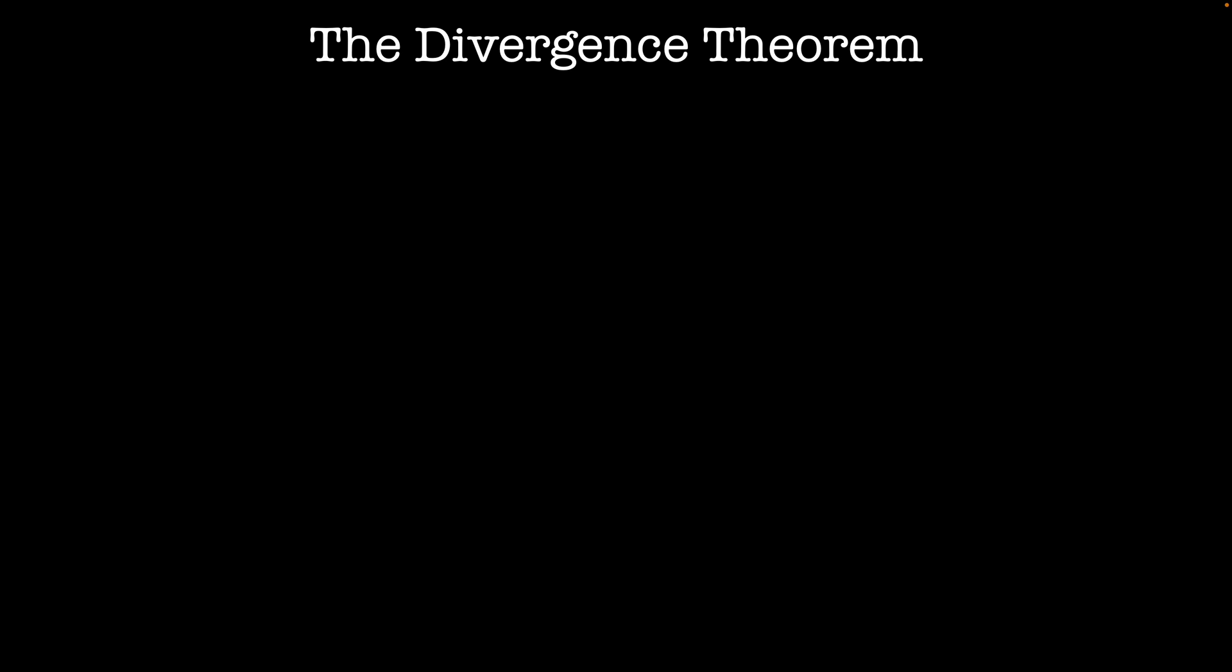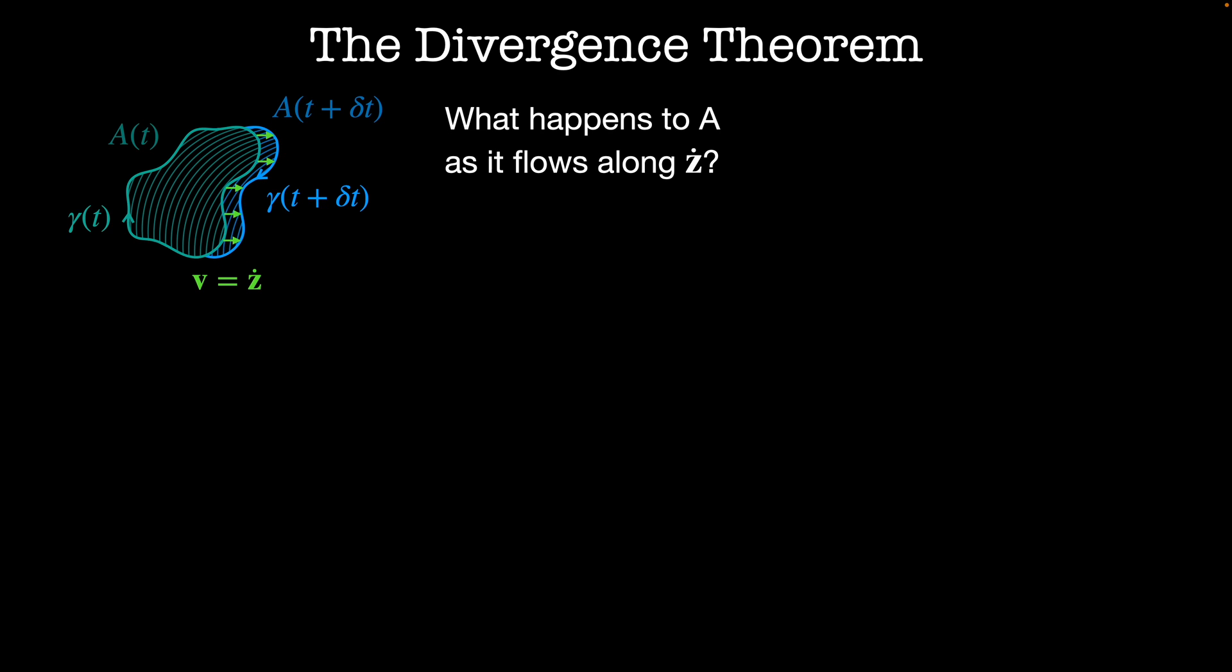Most of what we've looked at so far has been 2D but this applies to higher dimensions as well. Let's consider a higher dimensional system. A of t is some region in phase space that is bounded by the path gamma. We're going to move it according to z dot by some amount delta t. This is going to give us a new region at A of t plus delta t that's bounded by the curve gamma of t plus delta t. What happens to the region A as it flows along according to z dot? In particular, does the volume of A change as we evolve it forward in time? Let's zoom into a little section of the boundary gamma. This vector n is perpendicular to both the curve gamma and to its parent surface A. We'll look at some infinitesimal piece along this curve delta gamma and evolve it forward in time according to v times delta t.